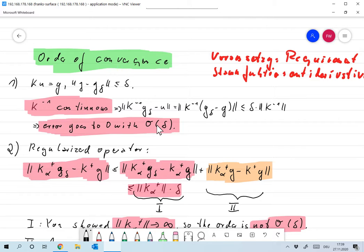this goes to zero with an order O of delta. So if K to the minus one is continuous, we get the optimal rate and that rate is delta.